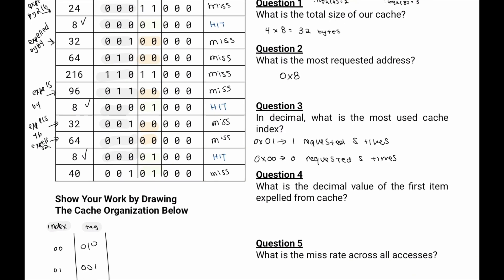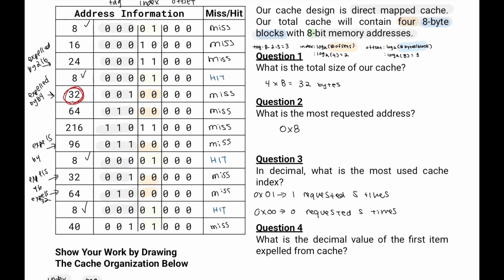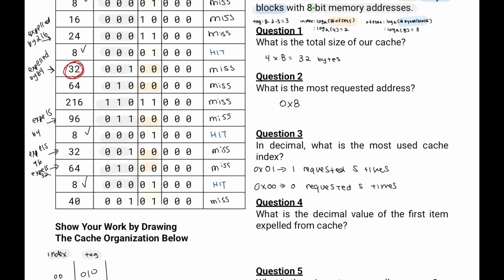Question 4. What is the decimal value of the first item expelled from cache? The first one that we expelled was 32, because it was expelled by 64. So 32.